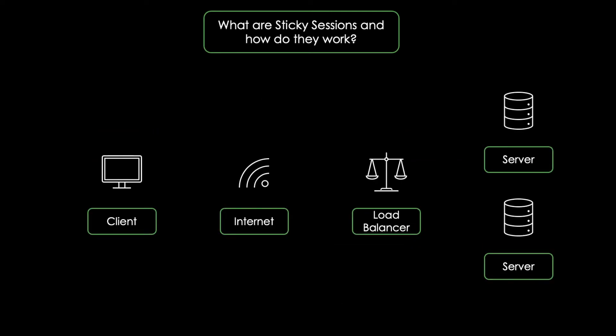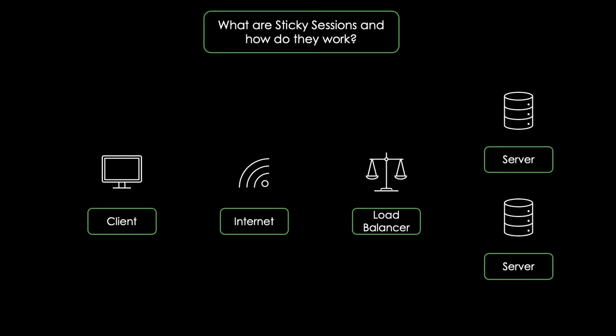However, if we utilize a load balancer between the client and the server, this could result in a situation where the first request from client A is distributed to server X, while the next request from the same client is distributed to another server. And this server does not have the session object in its memory, resulting in a loss of data, meaning that we would have to start from the beginning on this website.